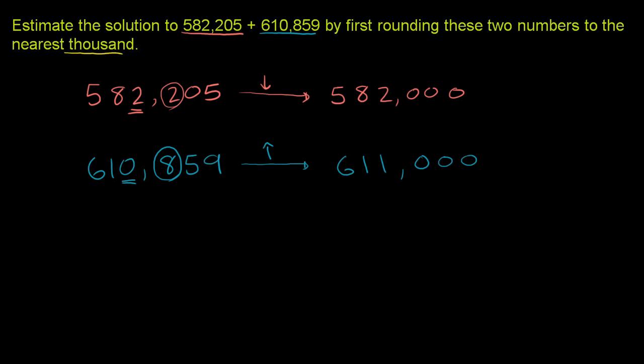So we've rounded the two numbers to the nearest thousand. And now we're ready to add. Let's add the two numbers. 0 plus 0 is 0. 0 plus 0 is 0. 0 plus 0 is 0. 2 plus 1 is 3. 8 plus 1 is 9. 5 plus 6 is 11. If there were more places here, we would carry the 1 in the tens place. But there isn't, so you can just write an 11 here.